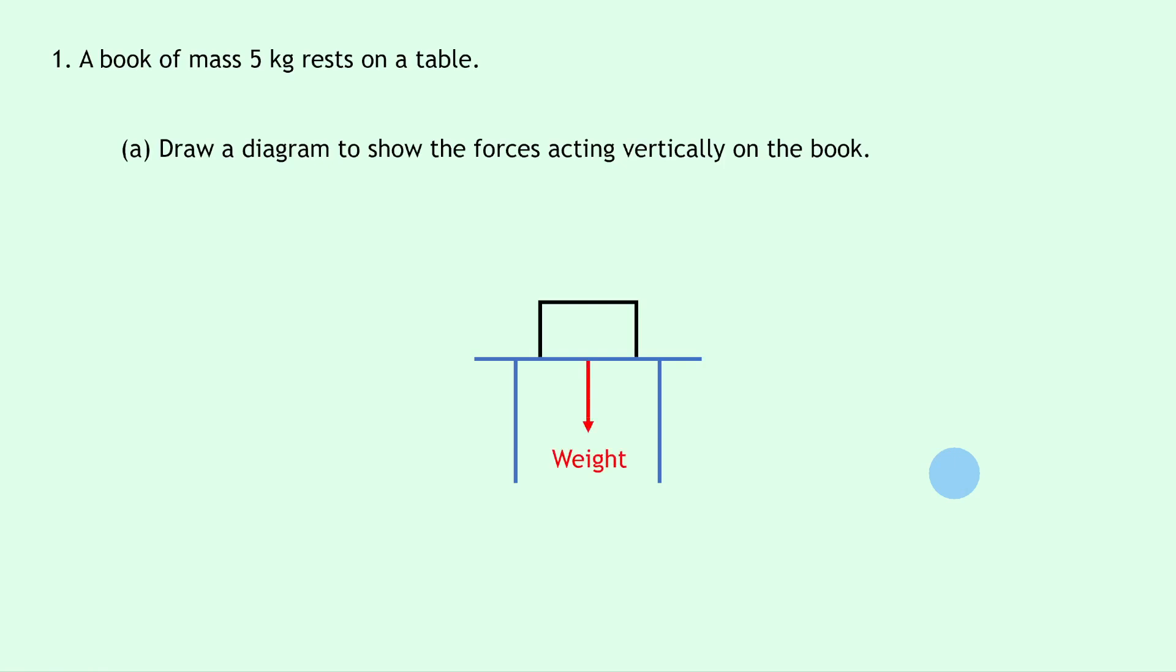So there's going to be a force acting downwards on the book, which is its weight, i.e. the force due to gravity. And because the book is at rest, there must be balanced forces here, which means there must be an equal but opposite force acting upwards on the book, which we can draw here. There's several names for this, which is reaction force or the normal force, and that's due to the force of the table on the book.